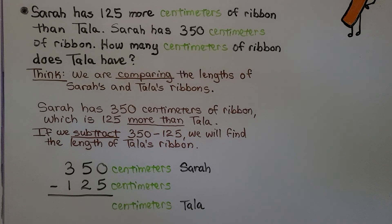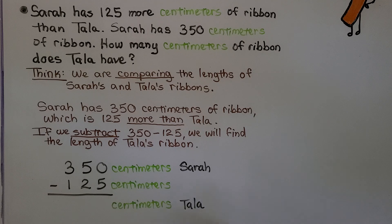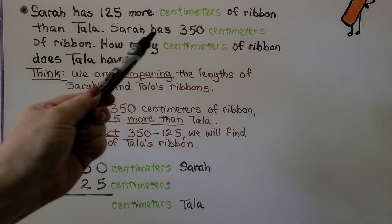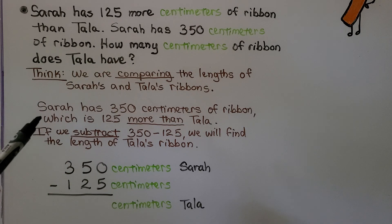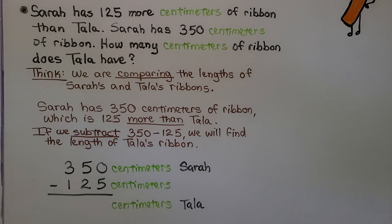Here we have a word problem. It says Sarah has 125 more centimeters of ribbon than Tala. Sarah has 350 centimeters of ribbon. How many centimeters of ribbon does Tala have? We are comparing the lengths of Sarah's and Tala's ribbons. Sarah has 350 centimeters, which is 125 more centimeters than Tala. So we need to subtract.